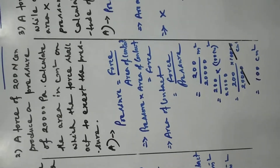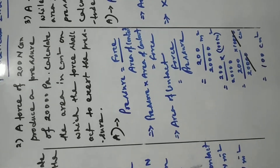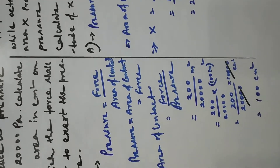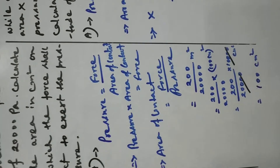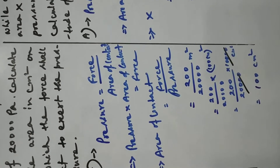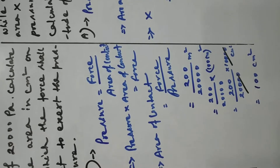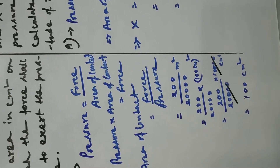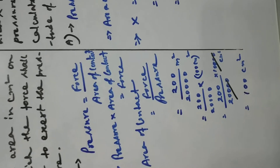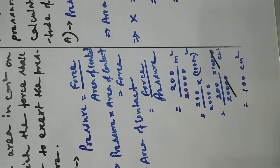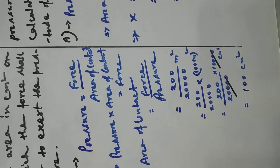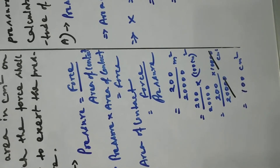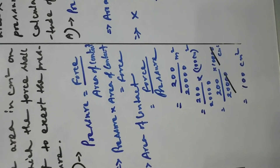We have to convert this meter square into centimeter square. One meter is equal to 100 centimeter, so one meter square is equal to 10,000 centimeter square. After calculation, area of contact is equal to 200 by 20,000 into 10,000 centimeter square, that is 100 centimeter square.